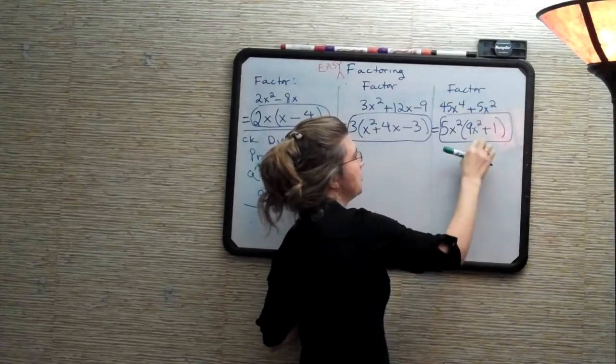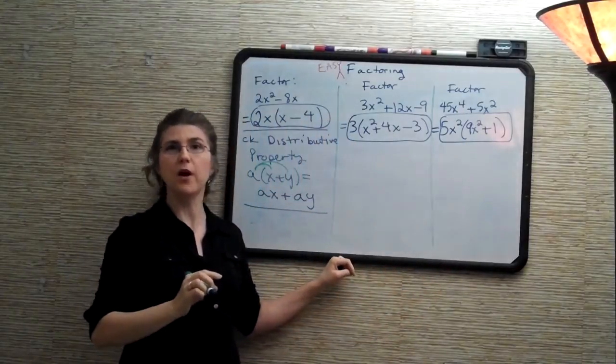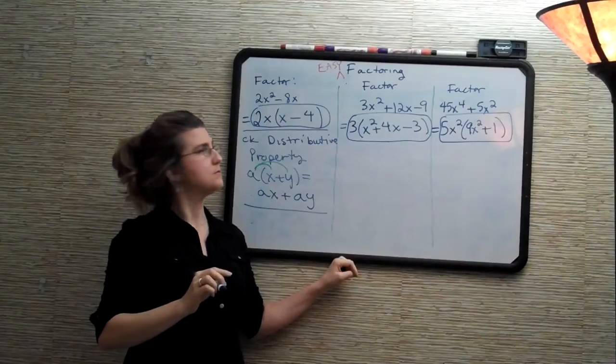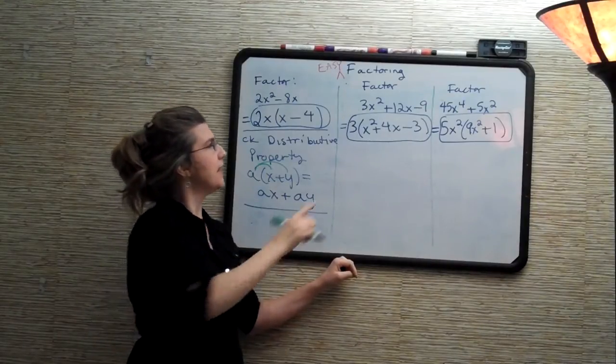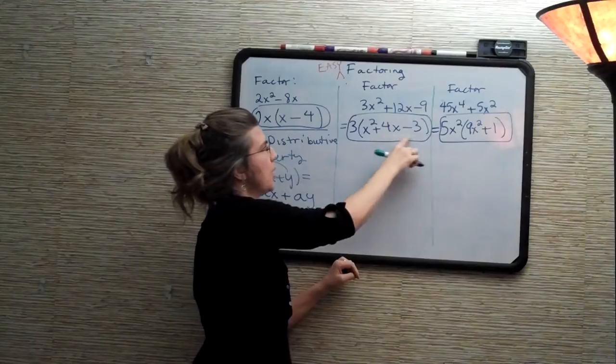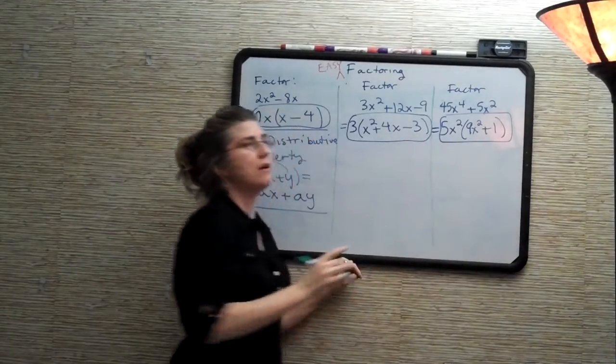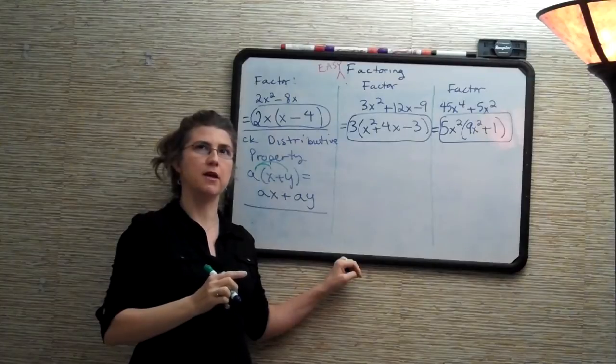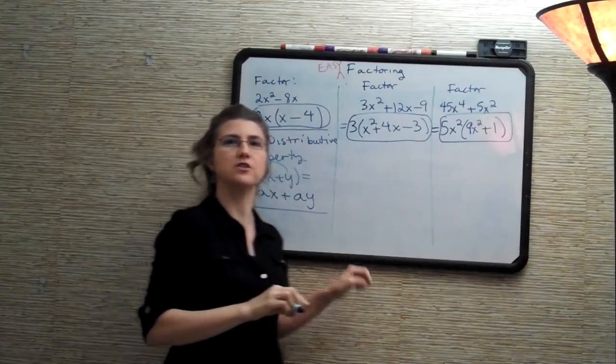Again, if the 9x squared plus 1 factored some more, we would go ahead and factor it. But again, I designed it so that that would not be the case. So, how can I tell that this part here and this part here do not factor? We're going to do another video on factoring. Maybe two videos. And then we'll come back and answer that question.